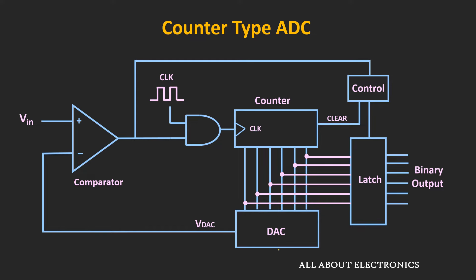Initially when the conversion starts, the counter is reset, and that's why the output of the DAC is equal to zero. So initially, this input voltage is greater than the output of the DAC, and that is why the output of the comparator is high.